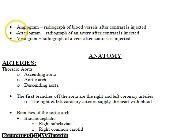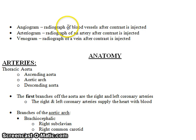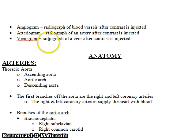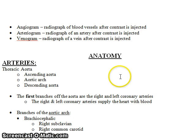The term 'angiogram' is a broader, generic term referring to any radiograph of a blood vessel — it is not specific to an artery or vein. An 'arteriogram' is a radiograph of an artery after contrast is injected. A 'venogram' is a radiograph of a vein after contrast is injected.